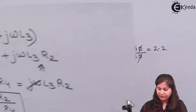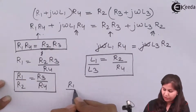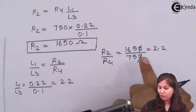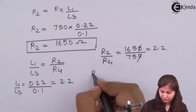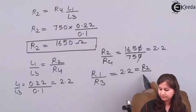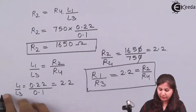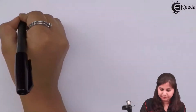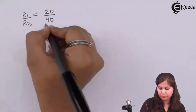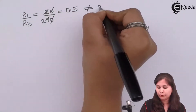From the real-part balance equation R1/R2 = R3/R4, or equivalently R1/R3 = R2/R4. The ratio R2/R4 we have already got as 2.2, so R1/R3 must also equal 2.2 to achieve the balance condition — only then will the bridge be balanced. Now if we calculate R1/R3: R1 is 20 Ohms and R3 is 40 Ohms, giving a ratio of 0.5, which is not equal to 2.2.